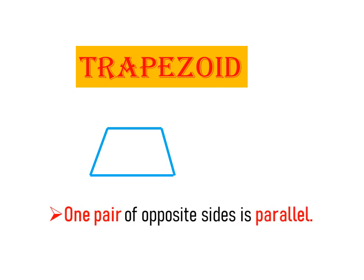Let's move to the last. It is a trapezoid or trapezium. Let us draw that. Now, let's give the definition of a trapezoid. One pair of opposite sides is parallel.